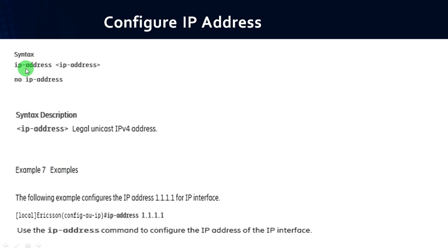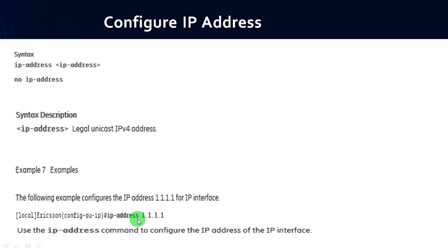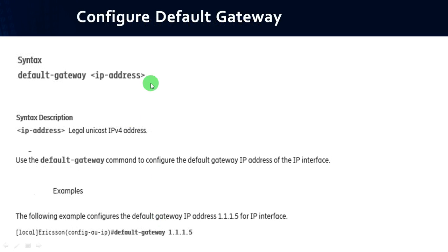If you want to configure the IP address, you have to follow the syntax: ip-address <ip address>, where the IP address is a legal unicast IPv4 address. For example, if you want to assign the IP address 1.1.1.1 to the IP interface, you follow the syntax: ip-address 1.1.1.1.